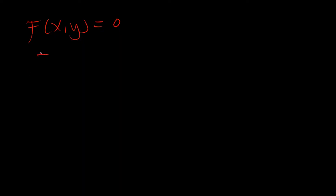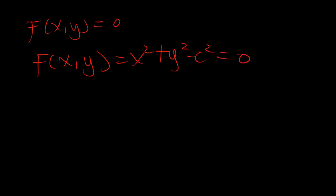For example, the equation of a circle given by x² + y² - c² = 0 is an implicit equation, because y has not been expressed in terms of x. Now, some implicit equations can be transformed into explicit form. In this example, you can say y equals the square root of c² minus x², making y the subject and transforming it from implicit to explicit form.